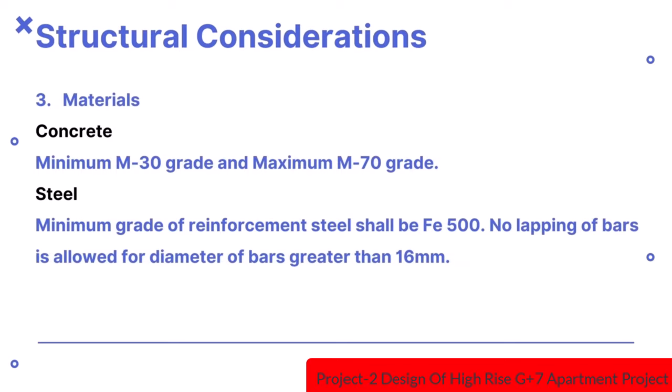Concrete should be of minimum M30 grade and maximum M70 grade. The minimum grade of reinforcement steel shall be FE500 and no lapping of bars is allowed for diameter of bars greater than 16mm.